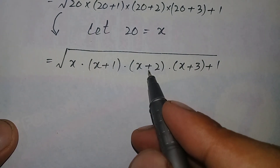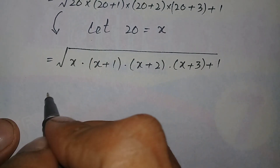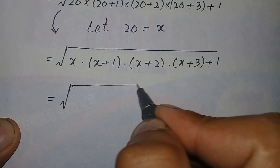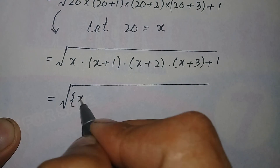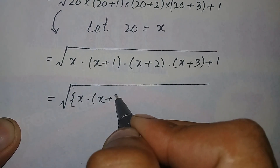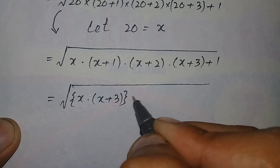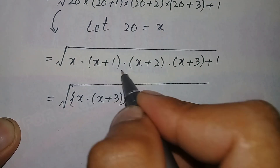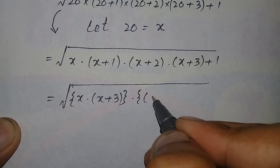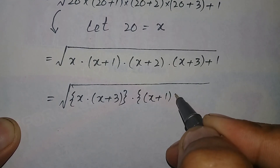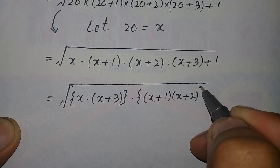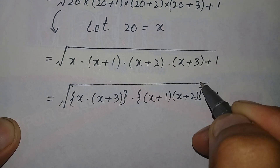Now rearranging these terms in this expression, we can write it as square root of x(x+3) times (x+1)(x+2), plus 1.